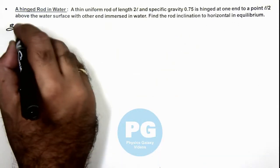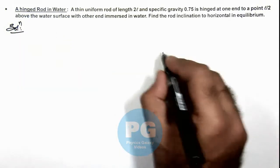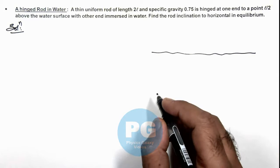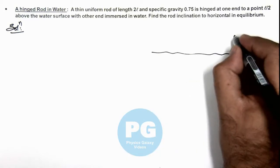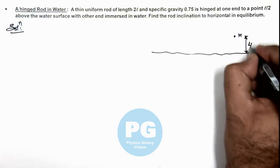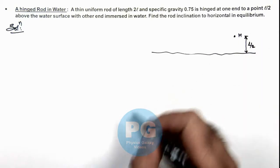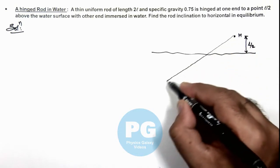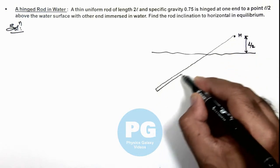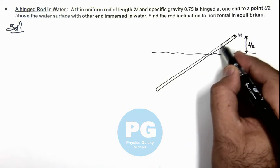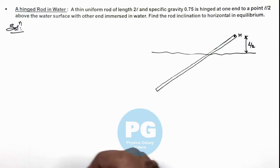Here if we draw the situation, this is the water level. Above water level there is a hinge H located at height l/2. A rod is hinged and the other end is in the water, so finally the rod will be located in such a manner that a part of the rod is located outside as it is hinged, and another part is submerged in water.